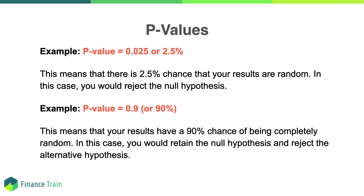For example, let's say the p-value of a hypothesis test is 0.025 or 2.5 percent. This means that there is a 2.5 percent chance that your results are random. In this case, you would reject the null hypothesis because 2.5 percent is a very small probability that your results are random, which also means that your results supporting the alternative hypothesis are highly believable. On the other hand, a high p-value of 0.9 or 90 percent means that your results have a 90 percent chance of being completely random and having nothing to do with your experiment. In this case, you would retain the null hypothesis and reject the alternative hypothesis because your results in support of the alternative hypothesis are highly random and not to be believed.